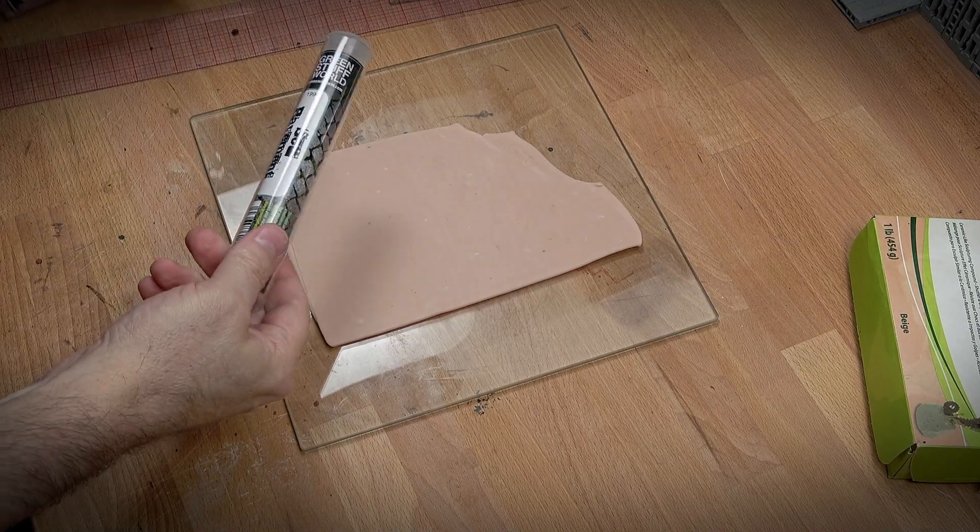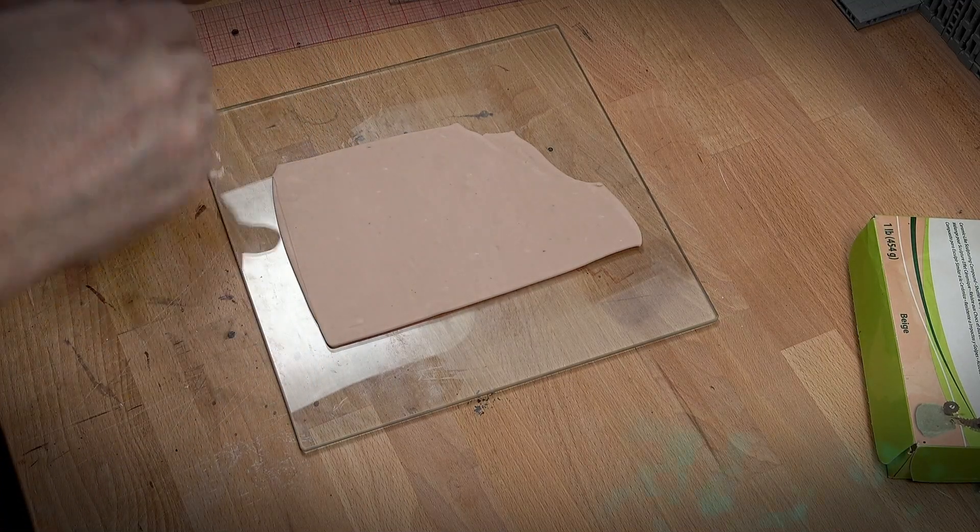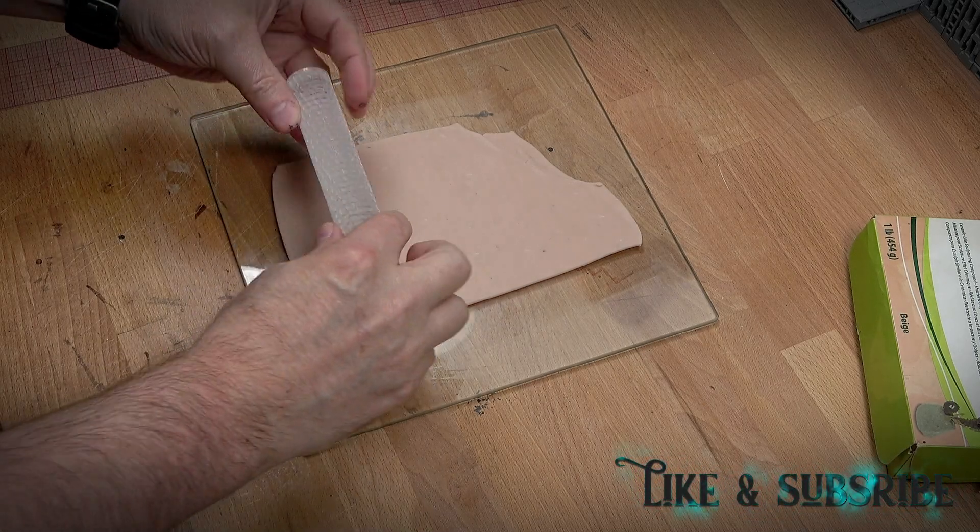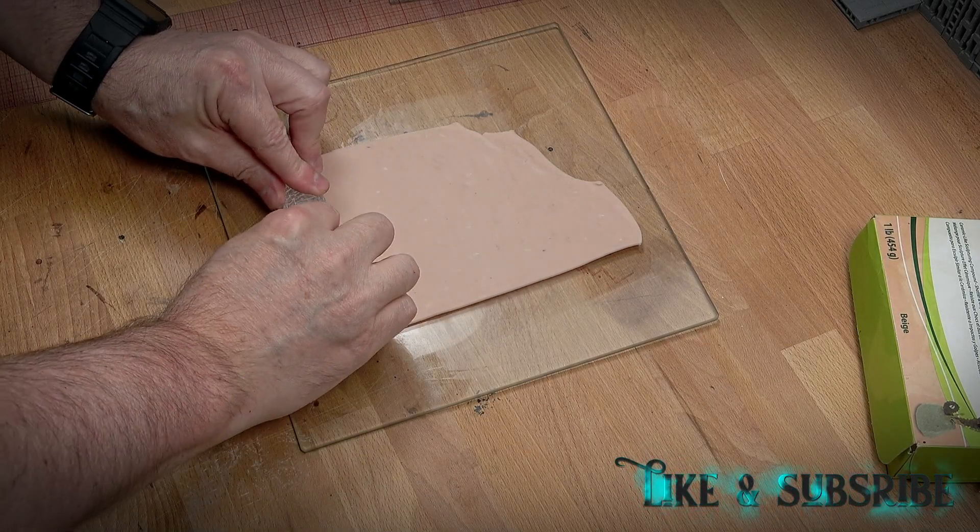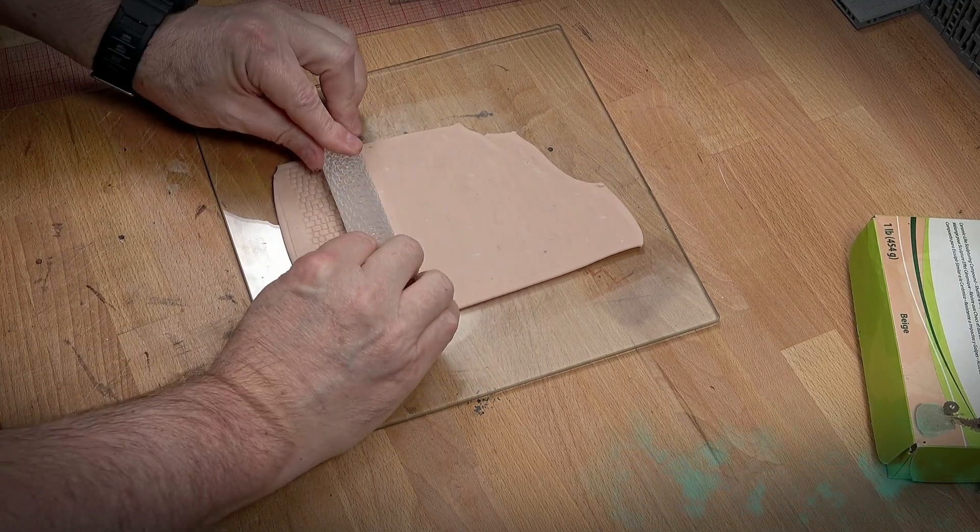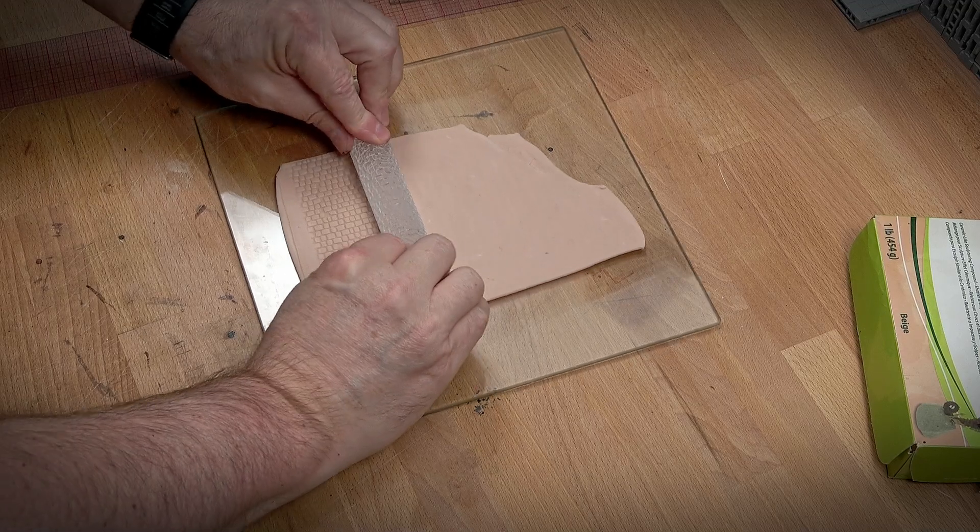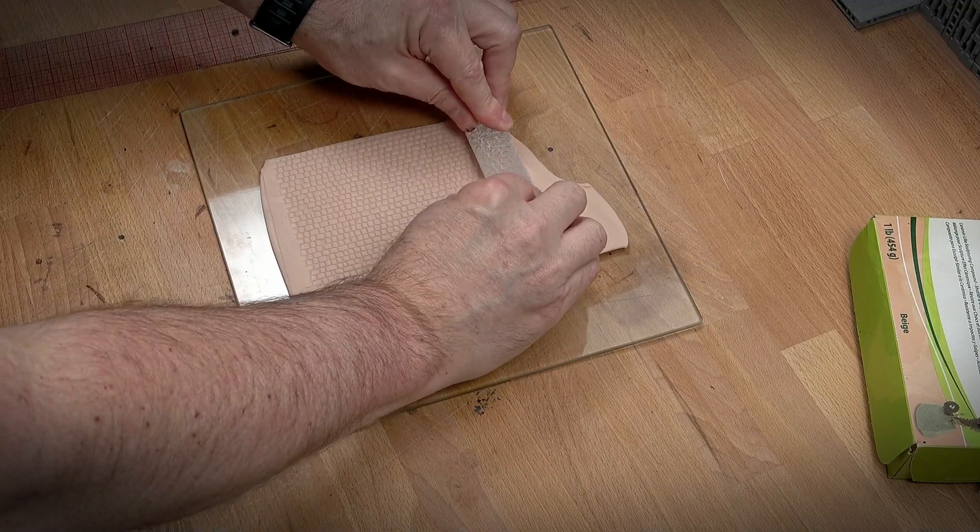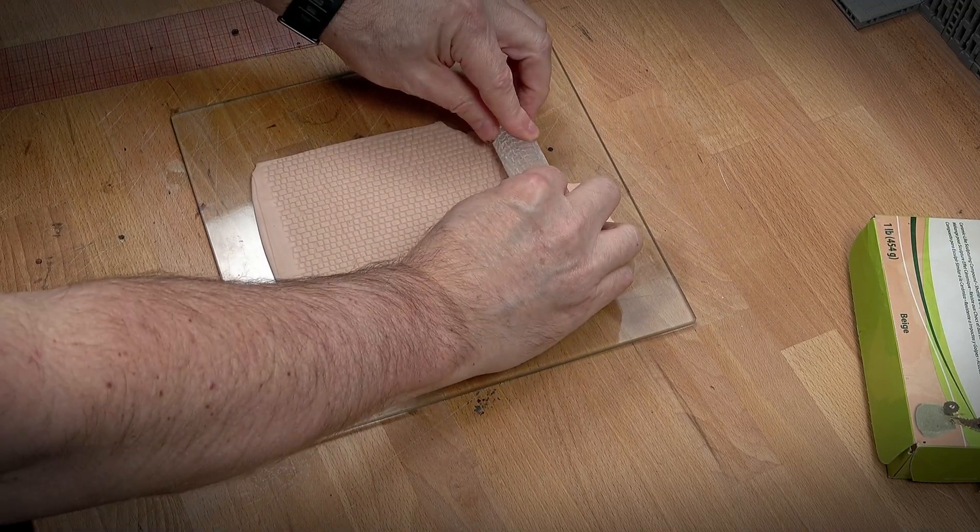Green Stuff World is another great source of texture rollers. It's not an endorsement, it's a hearty endorsement, but not a paid one. They create things for scale model making. So they are really nice textures and they work really well for scale terrain.